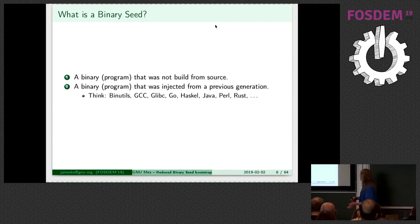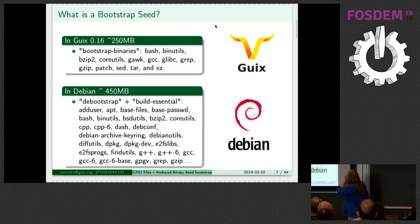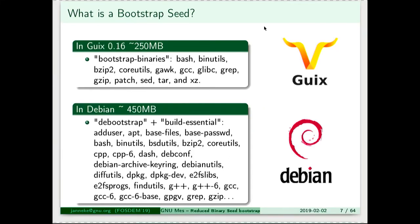A binary can also be a program that you have the source code to, and you might be thinking that you're running the program from source, but actually, it's a previous version, a previous generation of the program that you have the source code for. You're actually using a binary that was created earlier. That's a very popular thing to do. We do it with GCC, but mainly any language. The current version 0.16 uses 250 megabytes of opaque binaries that we use to build the whole software distribution.